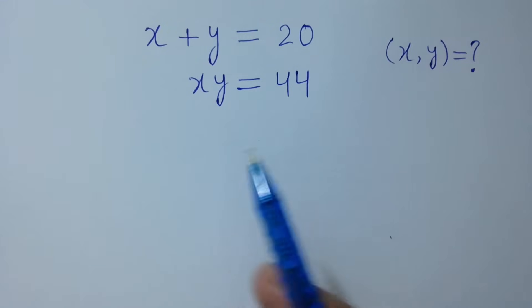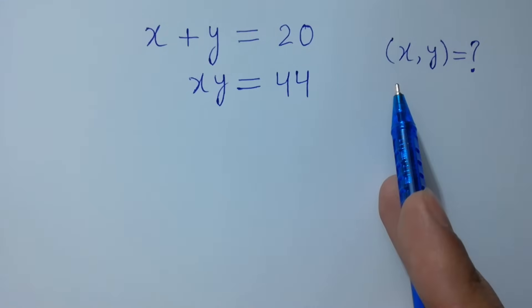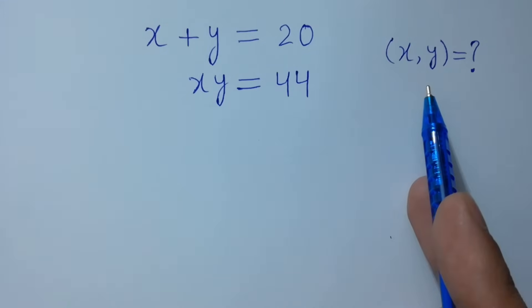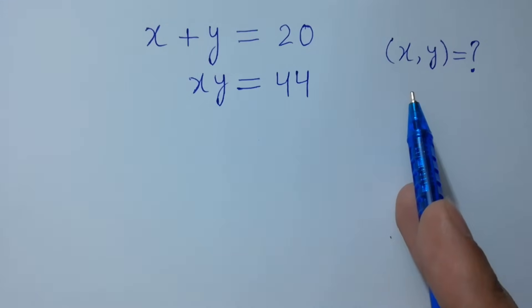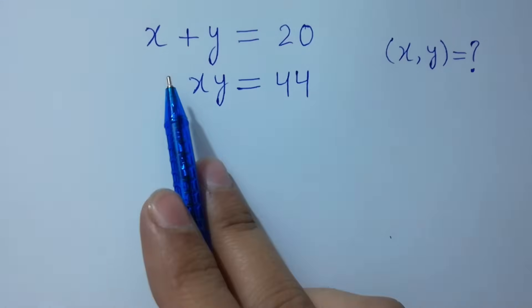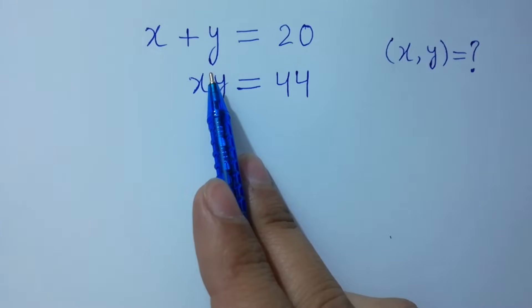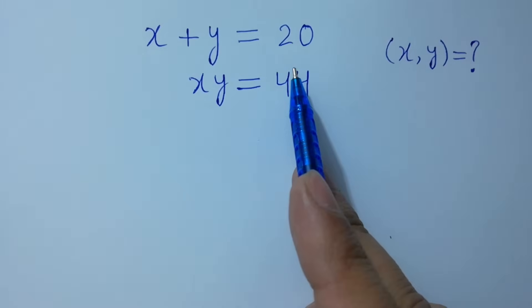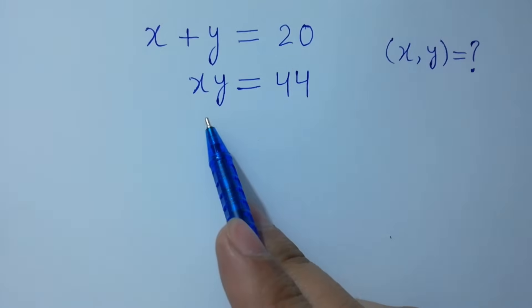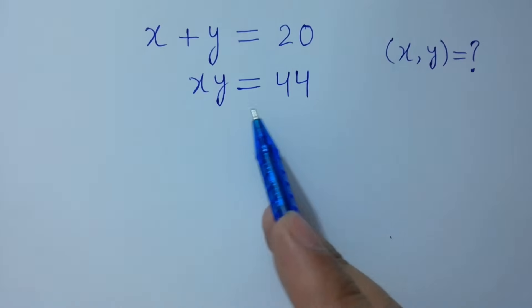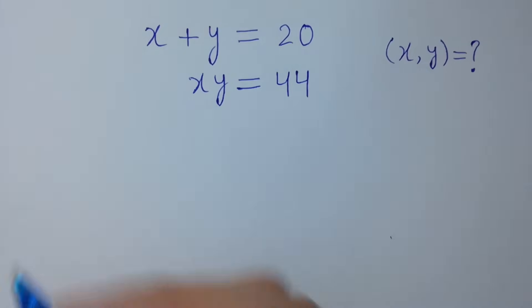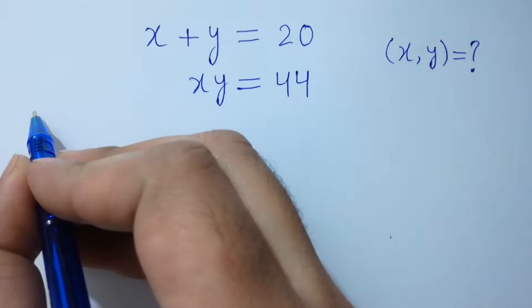Hello friends. Find the value of x and y if x plus y equals 20 and x times y equals 44. Let's have a solution.